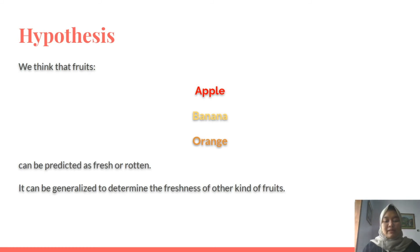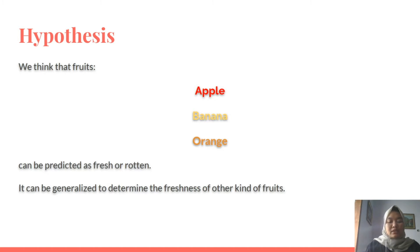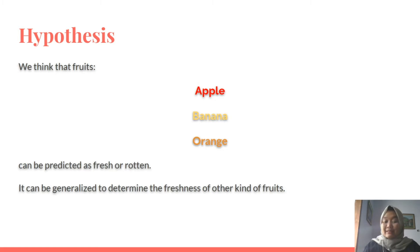Before we start, here is our hypothesis. First, we think that existing fruits from the dataset — apple, banana, and orange — can be predicted into just two classes: fresh and rotten. And then later, it can be generalized to determine the freshness of other kinds of fruits.